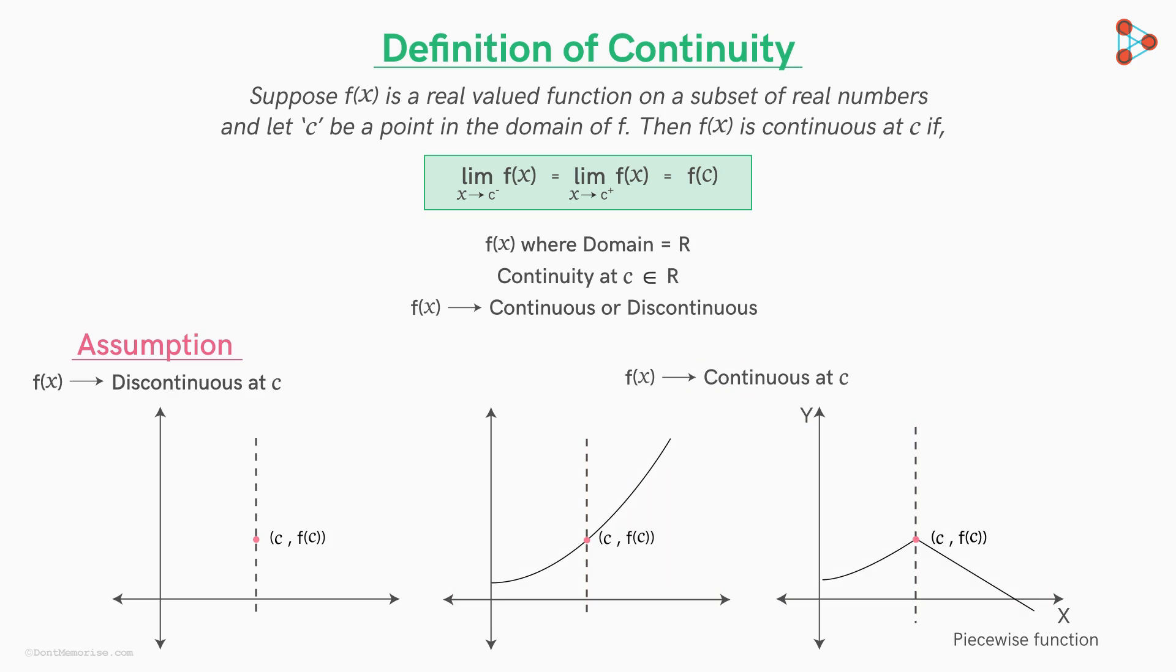Also, we can't predict anything about how long this connection will extend on either sides. But theoretically, we are assured that point c comma f of c will be connected with the graphs on either side in some neighbourhood around the point, no matter how tiny or huge that neighbourhood is on either side.